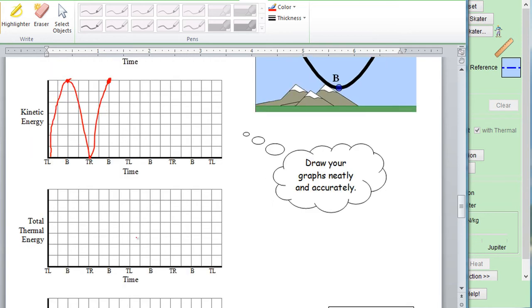Total energy would be the sum of kinetic plus potential. Oh, actually, sorry, total thermal energy. There is no friction in this particular case, so there is no thermal energy. It's going to be zero the whole way along.